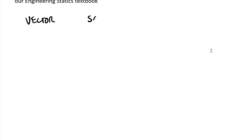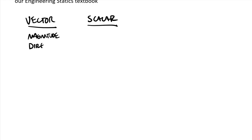Vectors include three things: a magnitude, a direction, and units. Some people include units as part of the magnitude, but I like listing them separately. The magnitude is the number, the direction is fundamentally what direction that number is going in, and the units are whatever unit system you're using.